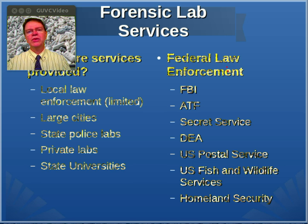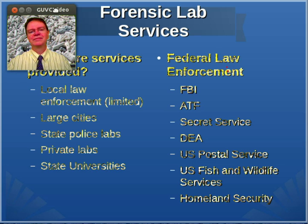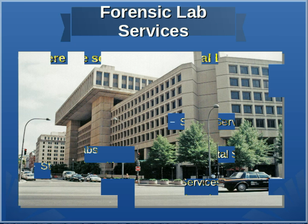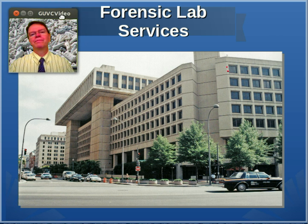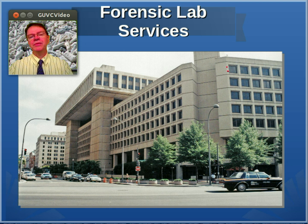The United States Fish and Wildlife Service also has their own forensic labs because of federal laws involving endangered species and poaching on federal land. Homeland Security, which is charged with protecting the borders of our nation, also has their own forensic labs. Below is a picture of the FBI building in Washington, D.C.